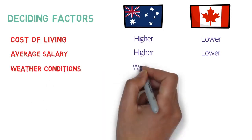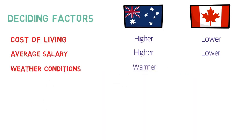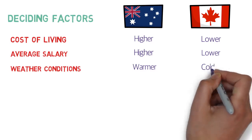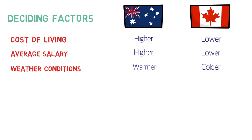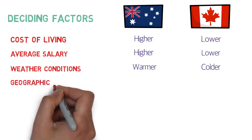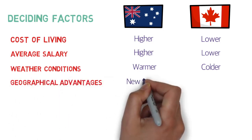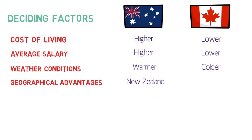Weather conditions are much better in Australia — it is much warmer. If you come from countries like India or Pakistan, you'll find the climate more familiar in Australia. Canada is famous for its cold weather; for 3 to 4 months of the year, temperatures can drop to around minus 25 to 35 degrees Celsius in some areas. Geographically, Australia enjoys proximity to New Zealand, while Canada benefits from its proximity to the USA, which is a great advantage especially for IT professionals.